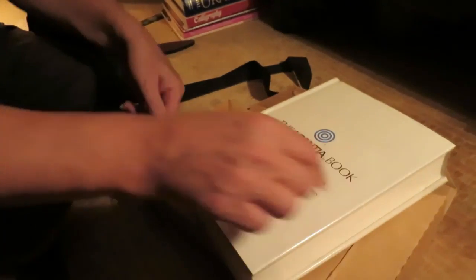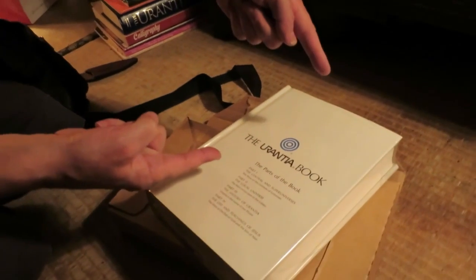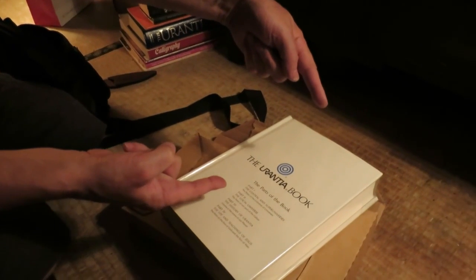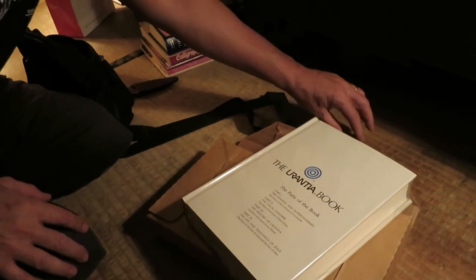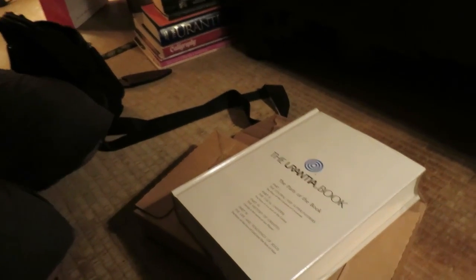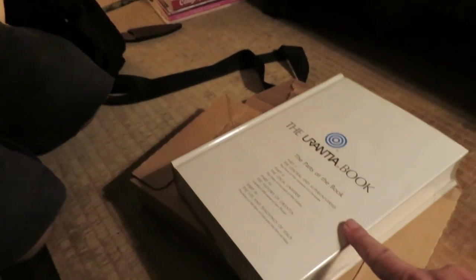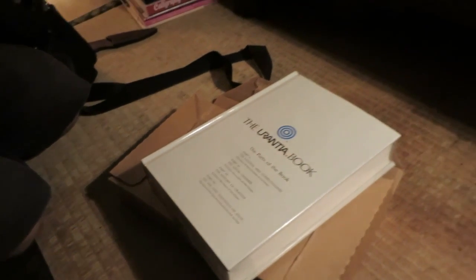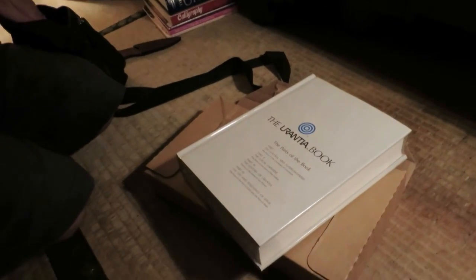And here we have a beautiful white Urantia book. Well, I think that actually this is the dust cover here, the book itself will be blue. You can see it's sealed in plastic from 1983.